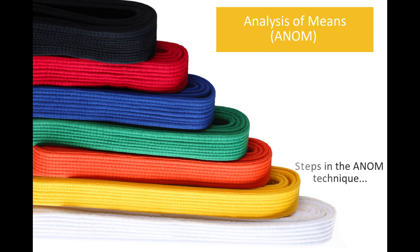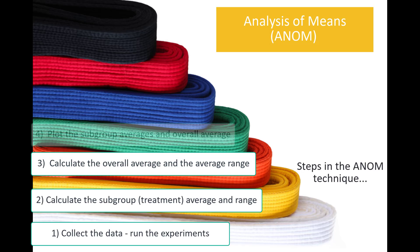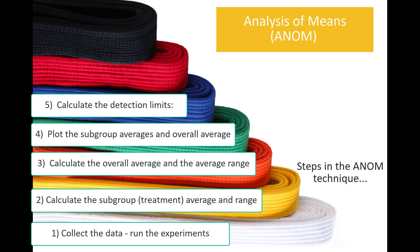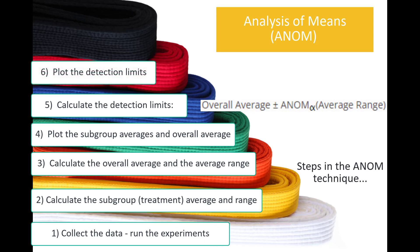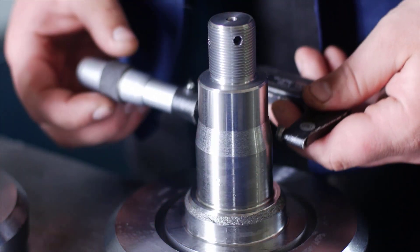What are the steps to start in the analysis of means? We'll do the analysis of range in a minute. You collect the data and you run the experiments, which we've done. Then you calculate the subgroup averages and range for each subgroup. Calculate the overall average and average range. Then you plot the subgroup averages and overall average. You calculate the detection limits. And this is given by the overall average plus or minus a scaling factor times the average range. You plot those and you interpret the analysis of means chart. This is very similar to control charts. The only difference is detection limits are used in place of control limits. But these are the steps in the analysis of means.